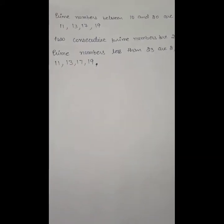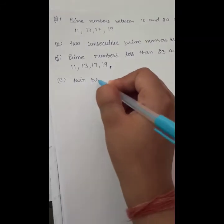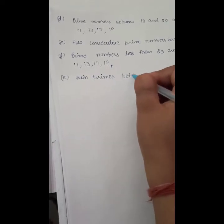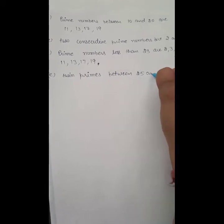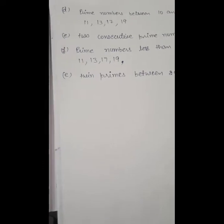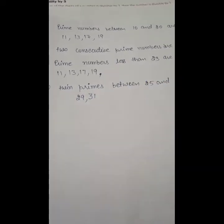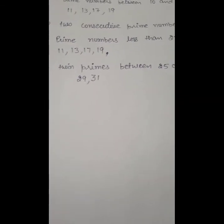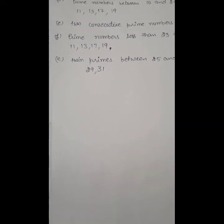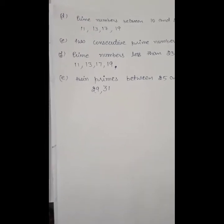Part G: A pair of twin primes between 25 and 35. Going through: 26, 27, 28 are composite. 29 is prime, 30 is composite, 31 is prime. The difference between 29 and 31 is 2, so they are twin primes. 32, 33, 34 are composite. So the twin primes between 25 and 35 are 29 and 31.